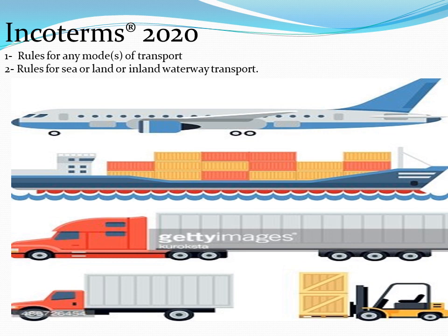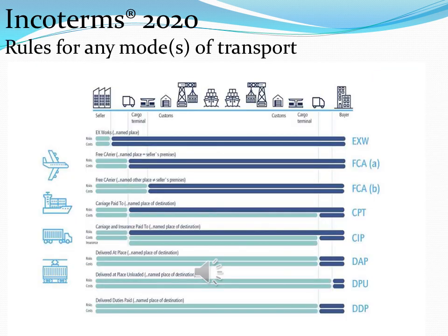The first category is for any mode or modes of transportation, and the second is rules for sea, land, or inland waterway transportation. Let's start with the rules of the first category, which are for any mode of transportation.